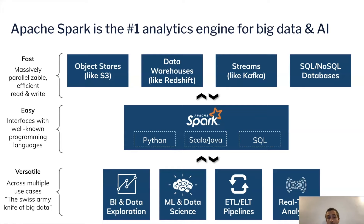A few words about Spark. Apache Spark is the number one analytics engine for big data and AI. What made Spark popular is that it's really fast — it can process large volumes of data much faster than previous technologies like Hadoop. Second, it's pretty easy to use because there are high-level APIs in Python, Scala, and SQL, with Python being the most popular these days. And last, it's very versatile — the Swiss army knife of big data. You can use it for batch ETL processing, streaming, data science, machine learning, or as a BI tool. And it plugs into the various popular data sources.